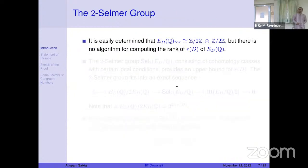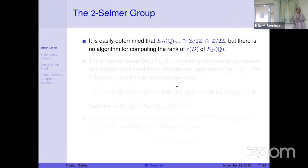The torsion part is easy to determine. By Mazur's theorem there are only 15 possibilities, but for the congruent number elliptic curve it is even simpler: the torsion part is (Z/2Z) × (Z/2Z).